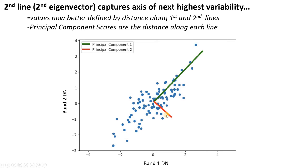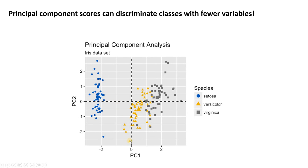Now what we do is take another line that is perpendicular to the first line and captures the axis of next largest variation — also perpendicular to the first line. This becomes our second eigenvector, and we measure the distance along this second eigenvector line. Depending on where these dots project onto that second line and where they fall along it, that gives us our second set of principal component scores, or PC2 scores. We've now essentially described this dataset in terms of its principal component scores, and we can plot them not in the original band one versus band two space, but in PC1 versus PC2 space. Depending on the dataset, this may help us visually discriminate between different classes.